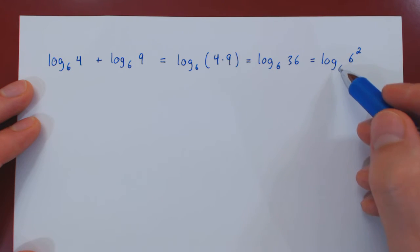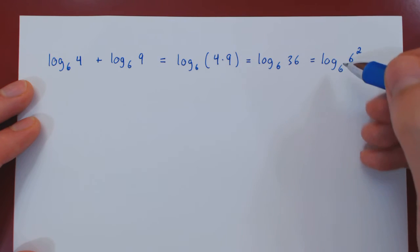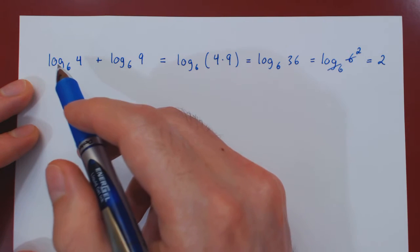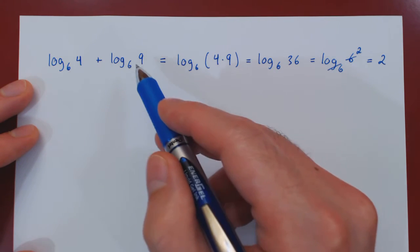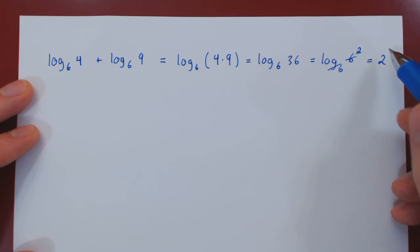And of course the logarithm base 6 is the inverse function of the exponential function base 6. So these two cancel and we're left simply with 2. So the logarithm base 6 of 4 plus the logarithm base 6 of 9 is equal to 2.